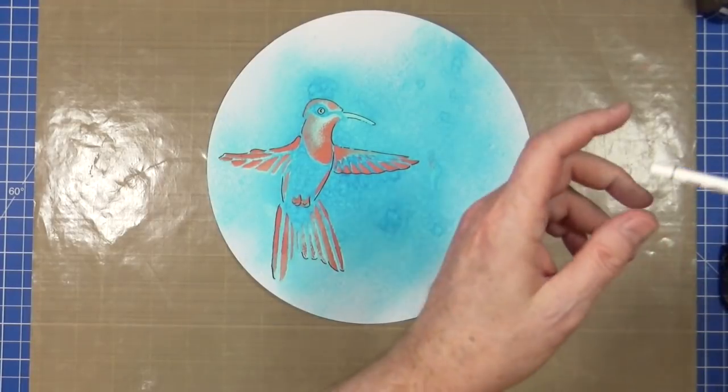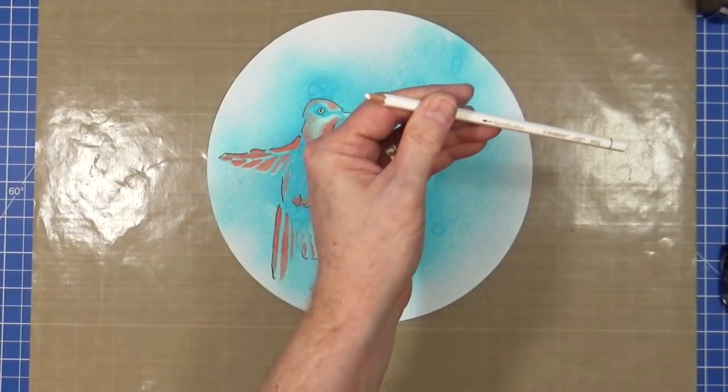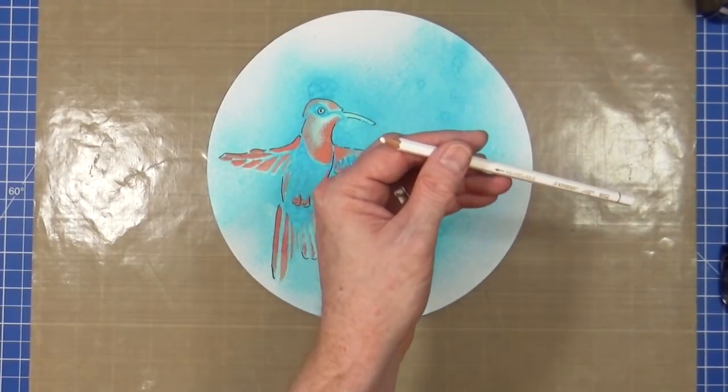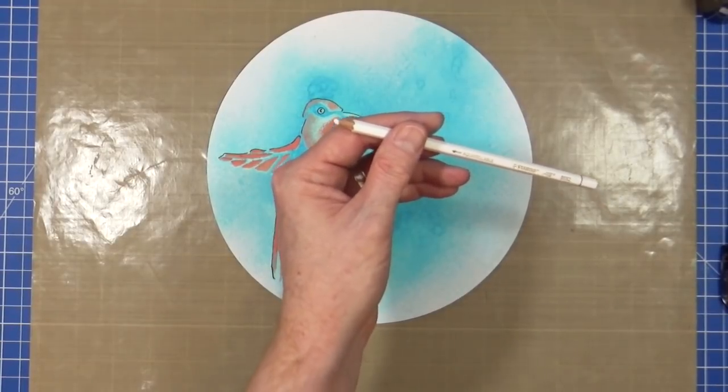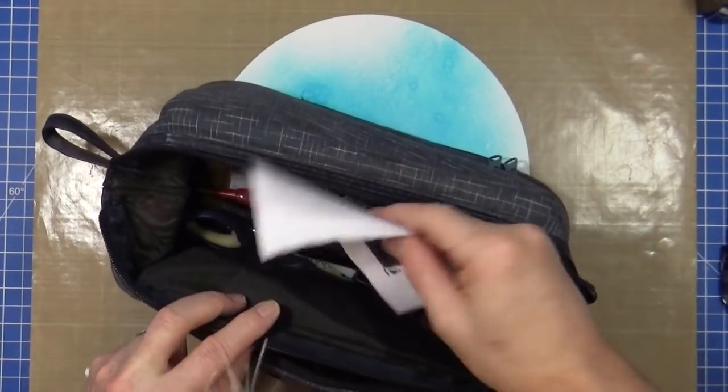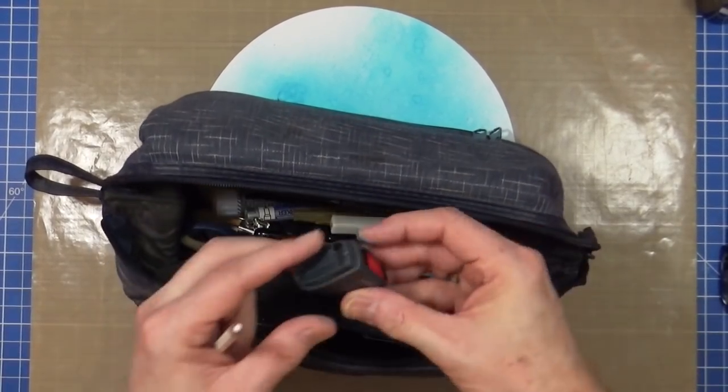Now I've also got a Stabilo white pencil. I have got somewhere kicking around a pencil sharpener. Messy kit. There it is.